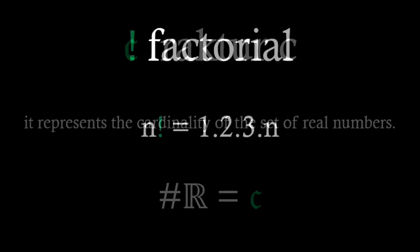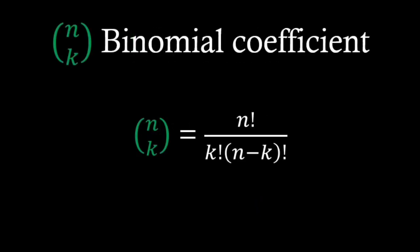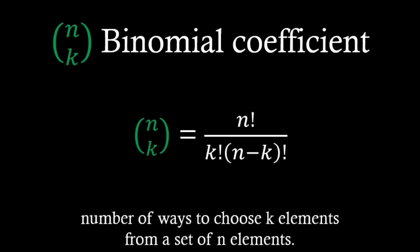Factorial is an operation that multiplies a number by all positive integers smaller than that number. Binomial coefficient looks like a fraction without a line, but it represents the number of ways to choose k elements from a set of n elements.